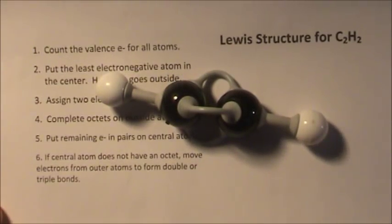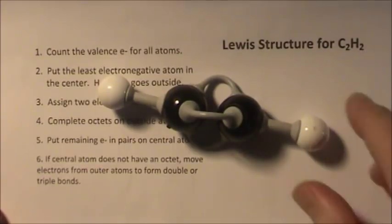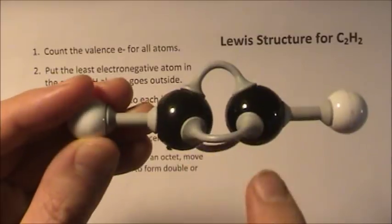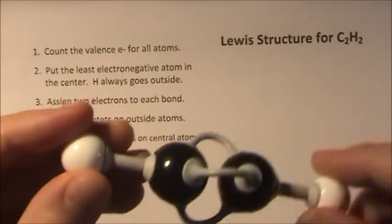Okay, let's try the Lewis structure for C2H2, ethyne. We have it right here. You can see the hydrogens on the outside, two carbons in the middle. What's all this? We'll see in a minute.